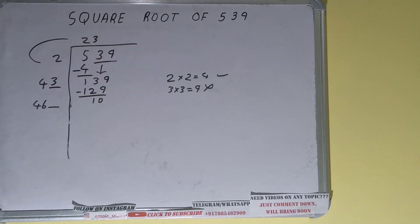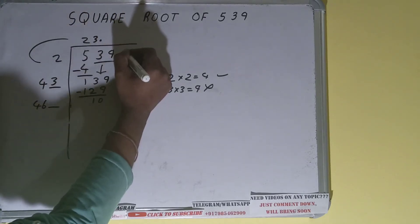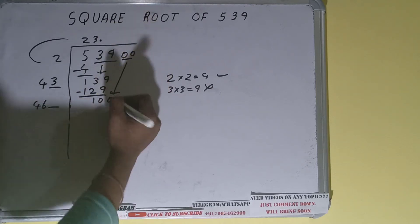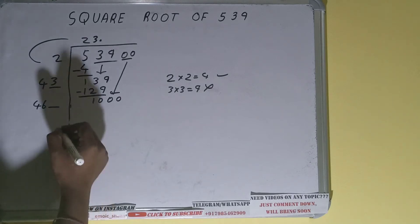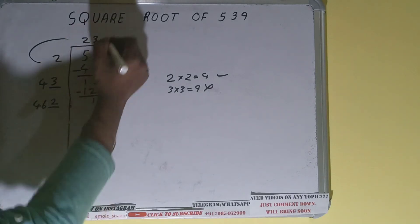...we don't have any more pair. So we'll put decimal. Once we put decimal we can bring pair of zeros, zeros, and number will become as 1000. So we can write two times. So two here and two here...